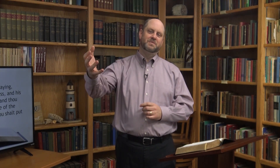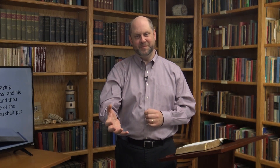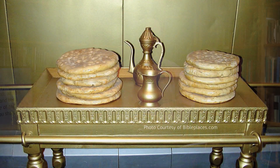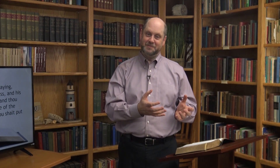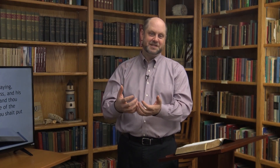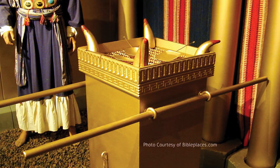The table of showbread was made from acacia wood and was overlaid with pure gold. The combination reminds us that Christ, the bread of life, was both God and man — the wood speaks to His humility and humanity, the gold to His glory and deity. The bread on the table was unleavened bread. Leaven in the Bible is a picture of sin. Being unleavened reminds us of there being no sin in God's presence and also the sinlessness of Christ, the bread of life.